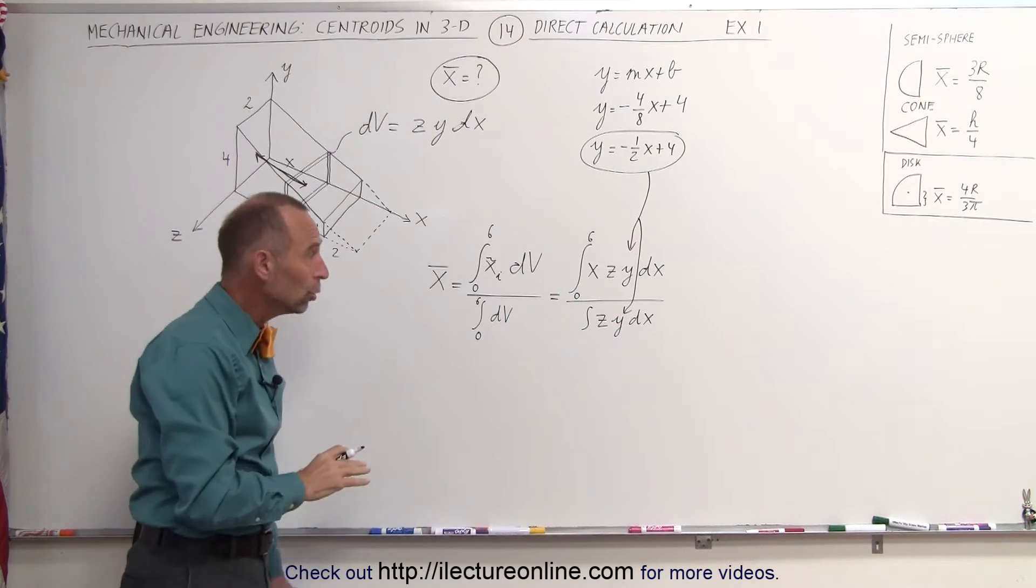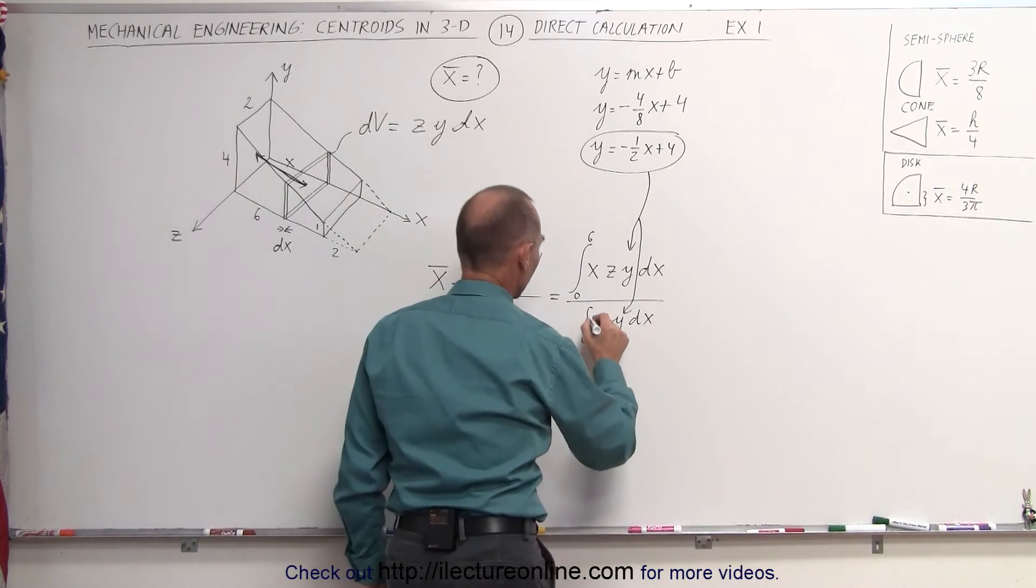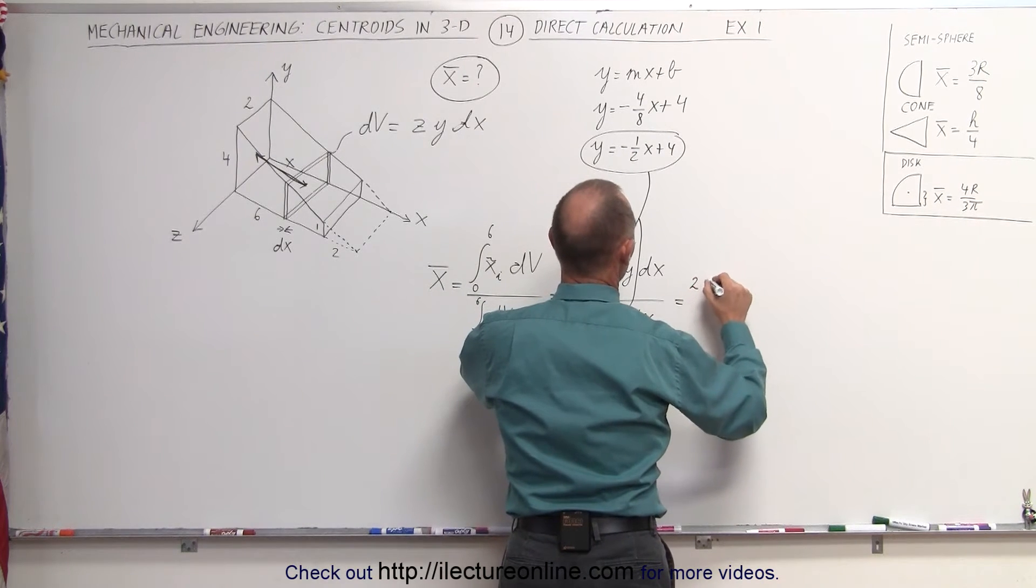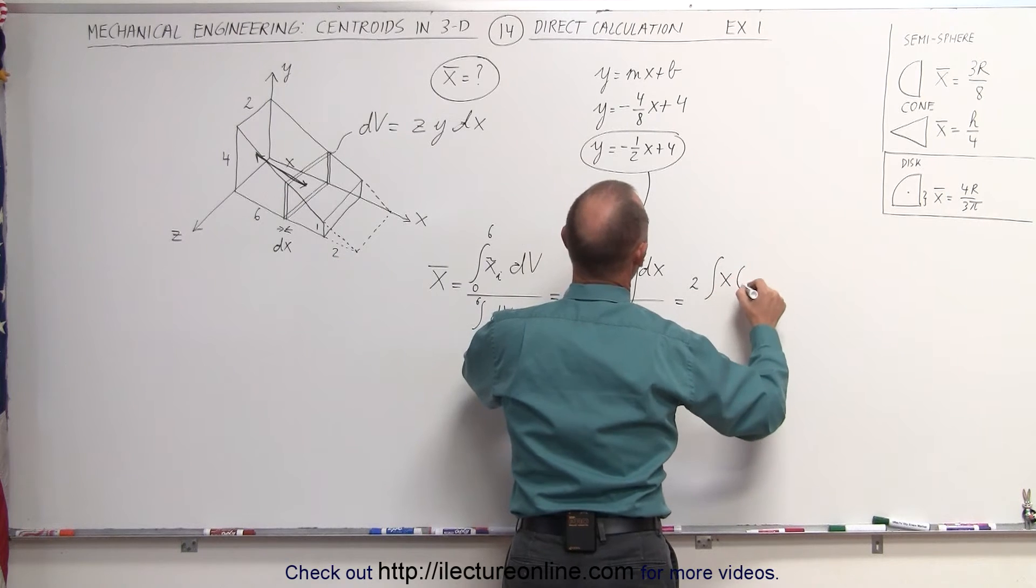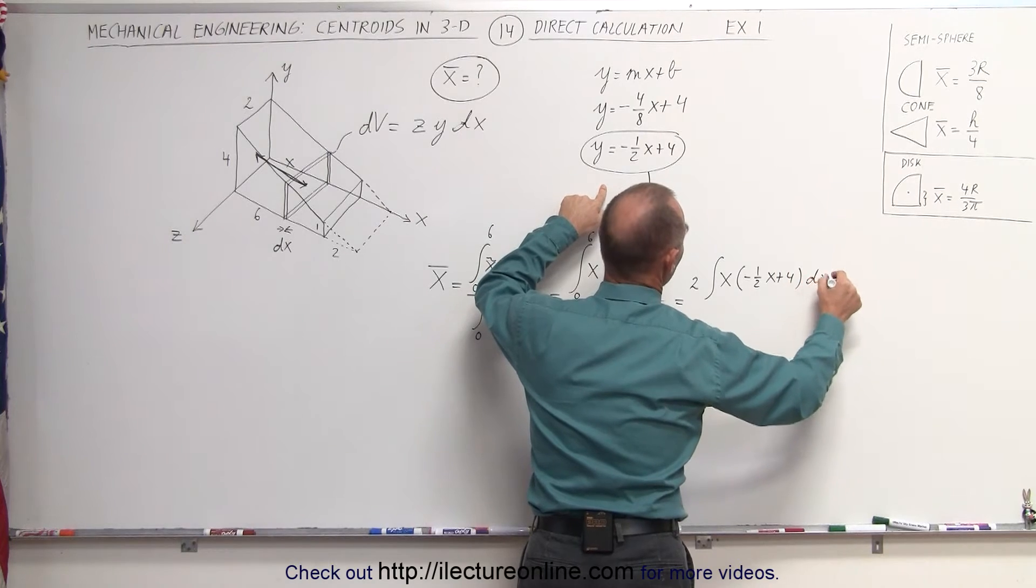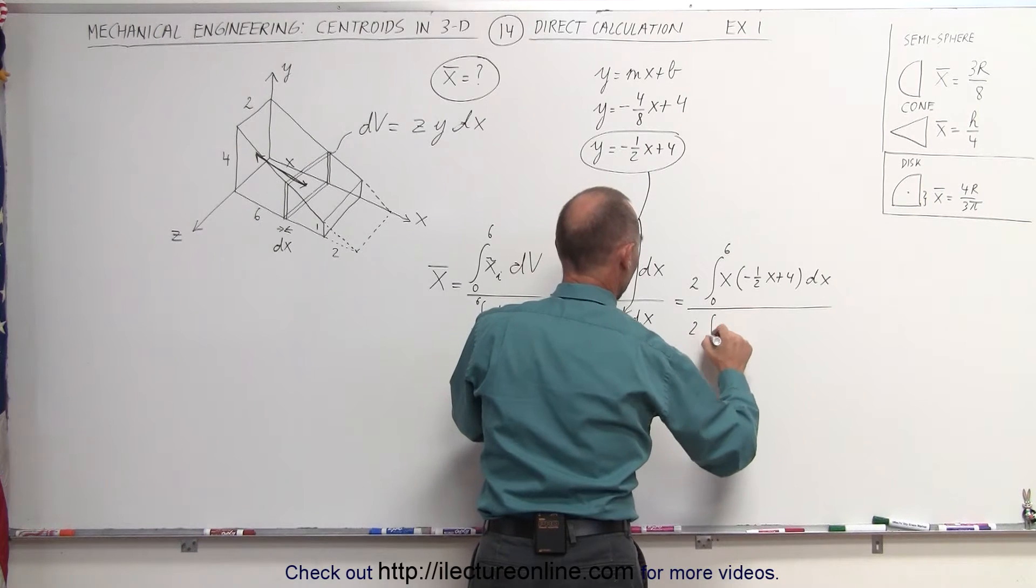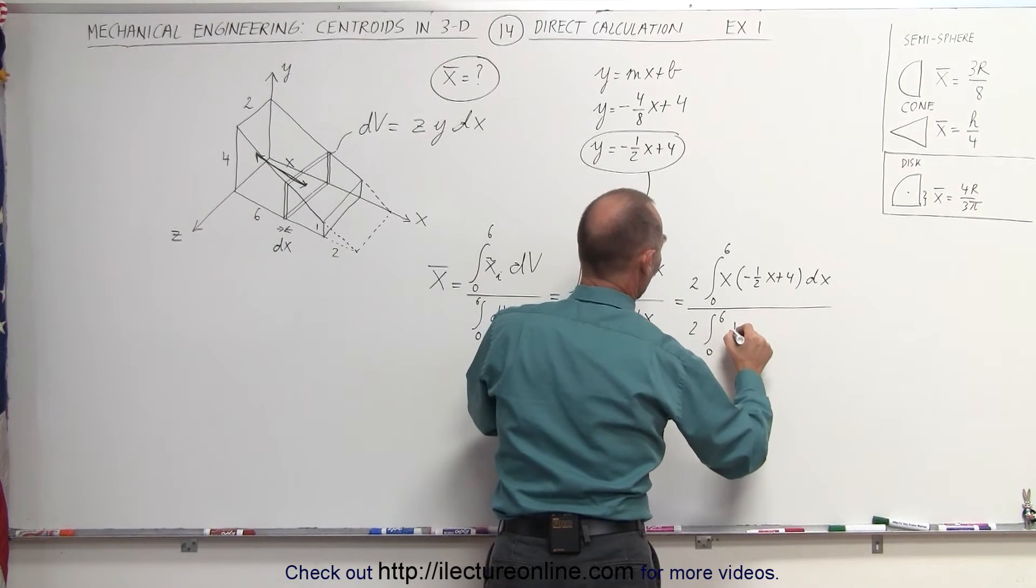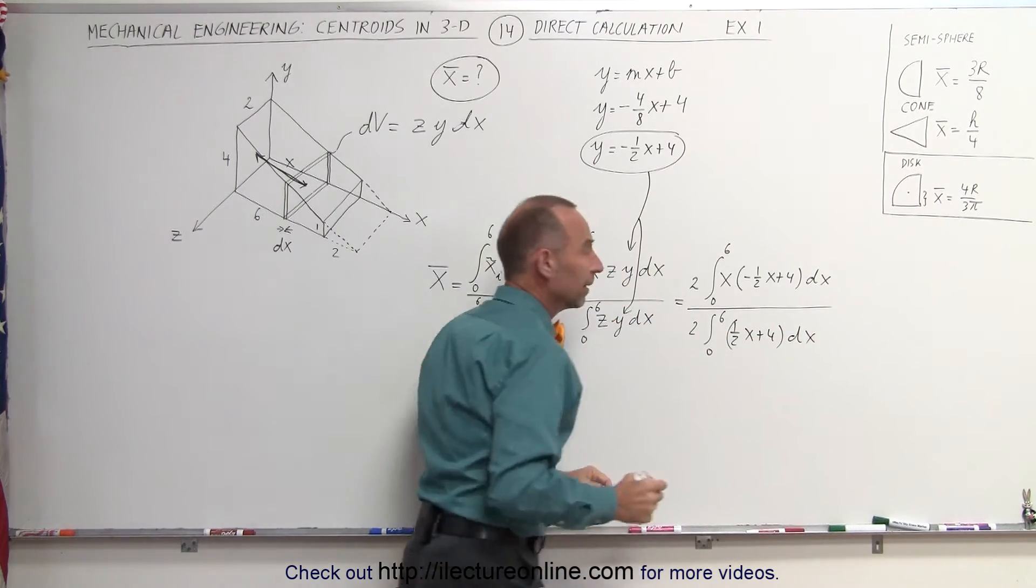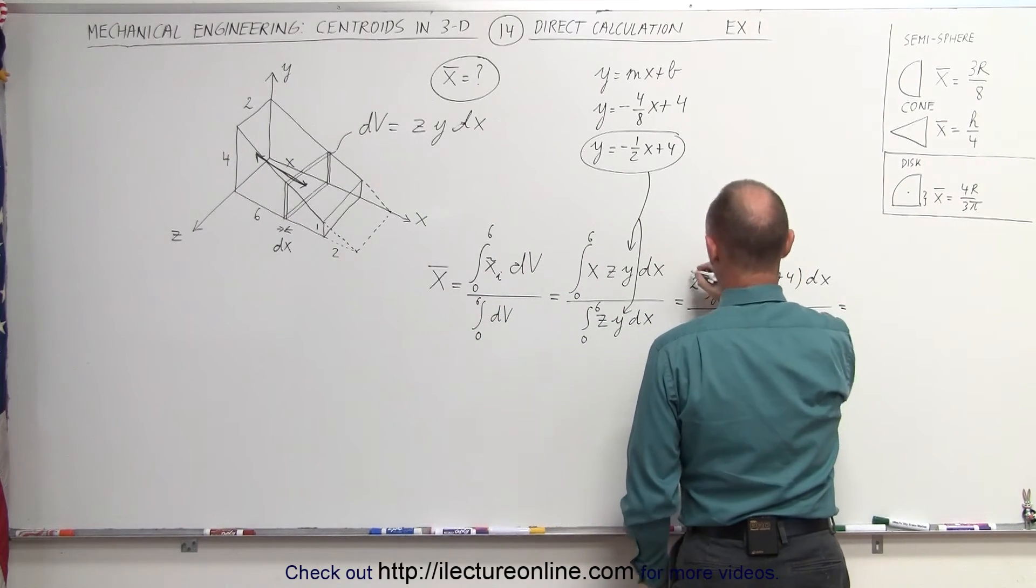And then we replace z by 2, and that means we can then integrate both the numerator and the denominator. Here the limits are also from 0 to 6. This is equal to 2. Since z is a 2, I can take that outside integral sign times integral of x times y. And y is minus 1 half x plus 4 times dx from 0 to 6 divided by, here also I can take the 2 outside integral sign from 0 to 6 times y, which is minus 1 half x plus 4 times dx.